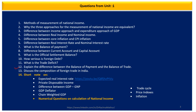Discuss the composition of foreign trade. Some short notes which you should prepare include topics on expected real interest rate, private disposable income, difference between GDP and GNP, what is GDP deflator — a very important question — chain-weighted GDP, trade cycle, and price indices and inflation. Prepare measurement of national income and balance of payment as long questions, along with all these short notes.